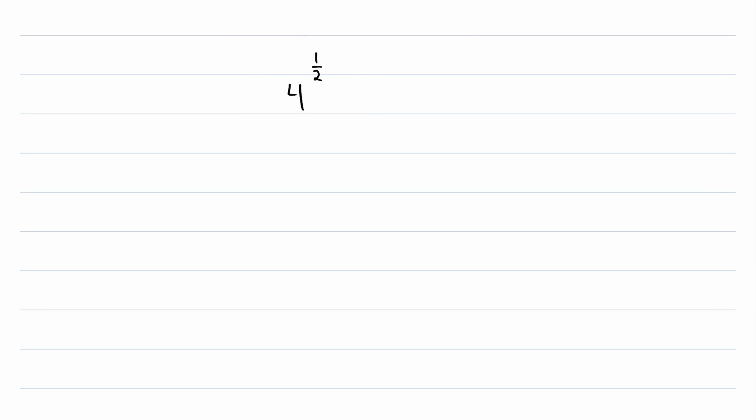What the heck does 4 to the power of 1 half mean? Well, if you'll humor me, let's go ahead and square this quantity. What is this equal to? If we remember our exponent rules, we can simplify this by multiplying this exponent of 2 by this exponent of 1 half. That will give us 4 to the power of 1 half times 2. 1 half times 2 is just 1. So this is 4 to the power of 1, which is just 4.